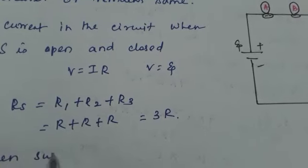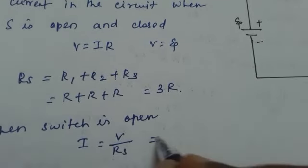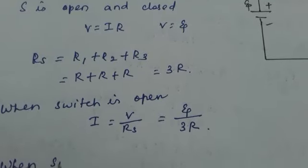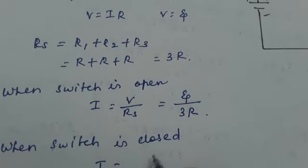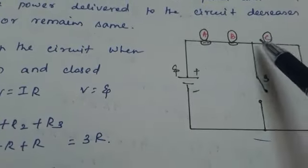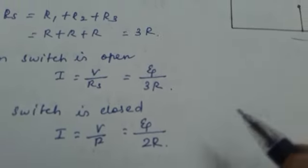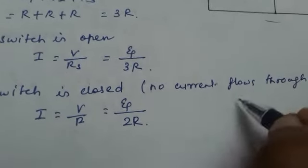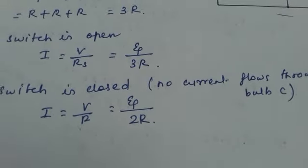When the switch is open, the current I = V/R_total = ψ/3R. When the switch is closed, no current flows through bulb C — it is bypassed. Current flows only through bulbs A and B, so the total resistance is 2R. Therefore, the current when the switch is closed is I = ψ/2R.